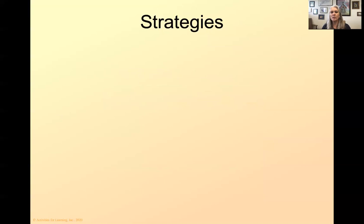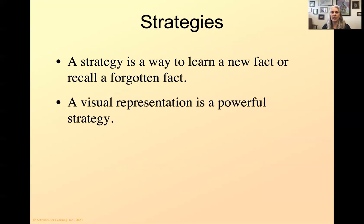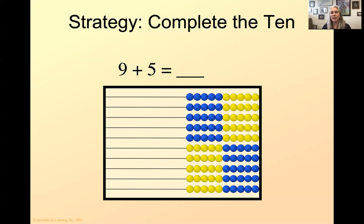So what is a strategy? A strategy is a way to learn a new fact or to recall a forgotten fact. And a visual representation is a very powerful strategy, being able to see it in your mind. So this first strategy is called complete the 10. So I've got nine plus five. I'm going to put nine on the first row, five on the next. I'm going to complete the 10. So I'm going to trade this bead for this bead. And when I trade them, I'm going to do it the exact same time. So I'm going to do one, two, three, trade. Answer is 10, four, or 14. See how that math way again of saying the numbers really helps with the facts here.